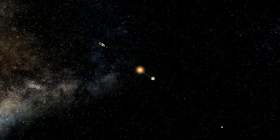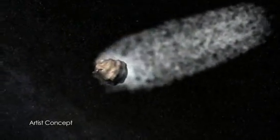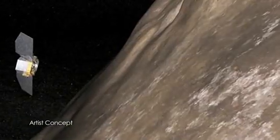Traditionally, when collecting samples on Earth, we use scoops, shovels, or coring drills. But on comets and asteroids, there is so little gravity that you would push yourself off the surface if you used one of these methods.